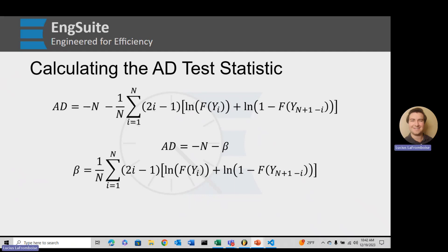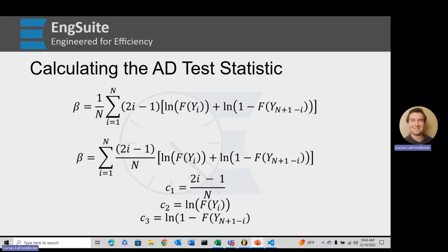Okay, so let's simplify that down. We'll say the Anderson-Darling test statistic equals minus N minus beta. Beta equals 1 over N times the sum of that whole mess. Let's simplify it further.